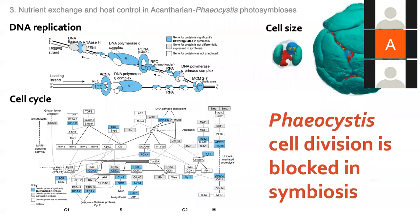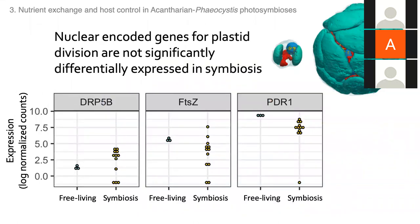Given that DNA replication and cell cycle genes are down-regulated while cells are getting much bigger in symbiosis, Phaeocystis cell division is blocked in symbiosis. But the cell isn't just getting bigger — it also has many more chloroplasts. In single-celled algae, chloroplast division is normally tightly coupled with cell division. Looking at nuclear-encoded genes for plastid division, I found that in symbiosis these genes are expressed at the same level or even higher than in free-living cells. So cell division is becoming decoupled from chloroplast division: chloroplasts are dividing even though cells are not, and chloroplasts are accumulating inside the cell.